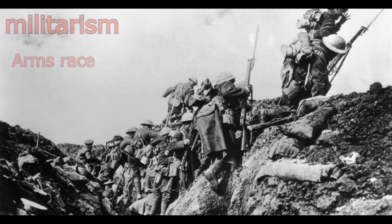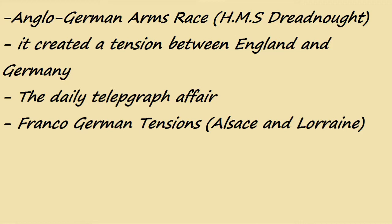Militarism: there was an arms race between the empires of that time. There was what we call the HMS Dreadnought — HMS stands for Her Majesty's Ship. This ship was built by the British, called the Dreadnought, and was supposed to end all ships of Europe. It featured an automatic 12-inch gun. The British wanted to control the seas, and Germany as a new empire wanted to surpass the British navy, which created tension between England and Germany.